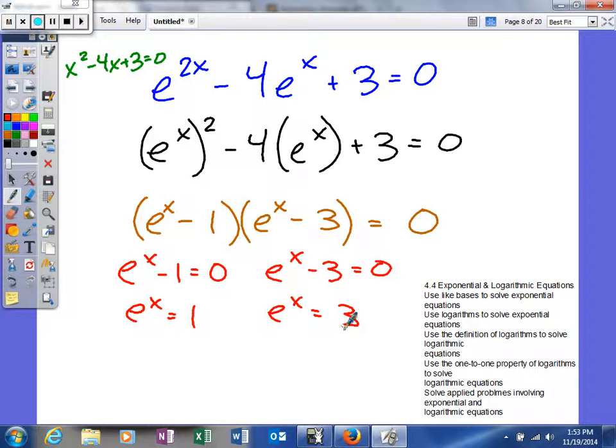To get rid of the nice little e, I'll use the natural log, because that's the inverse of the natural base. This will cancel, and leave me x is equal to the natural log of 1. Over here, it will cancel, and leaves me the natural log of 3.